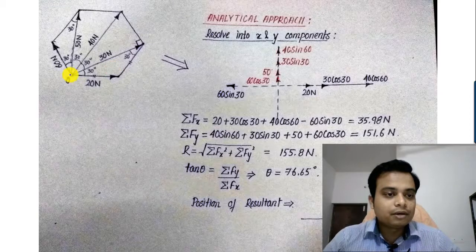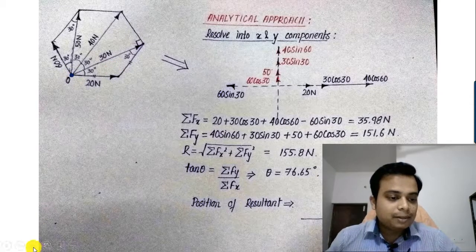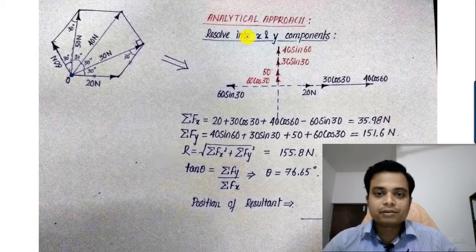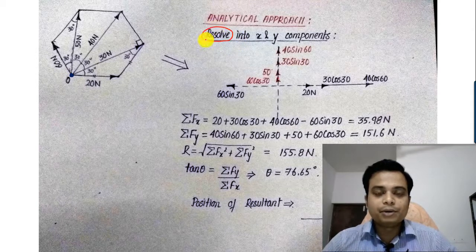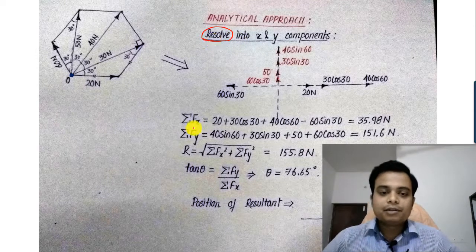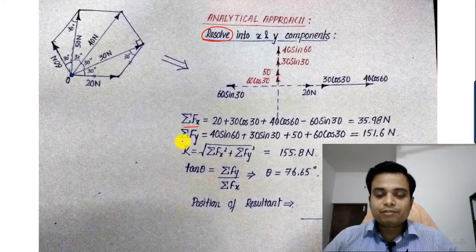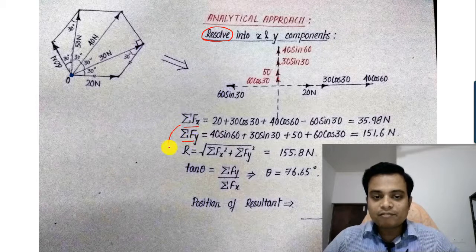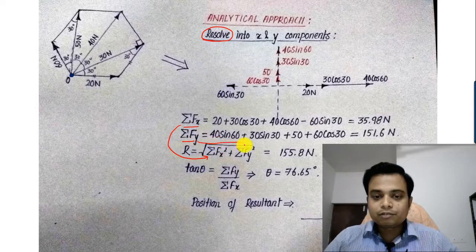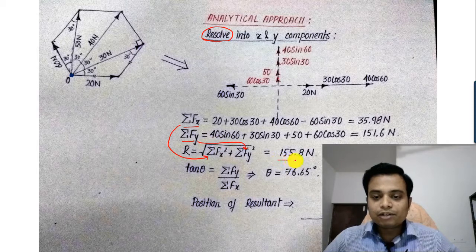All these forces which were acting over here at this point have been resolved into components. You can clearly see this resolved into components. Summation of Fx has been calculated, Fy has been calculated. Both of them have been put up over here in this formula, and the value of resultant that we have finally achieved is 155.8.